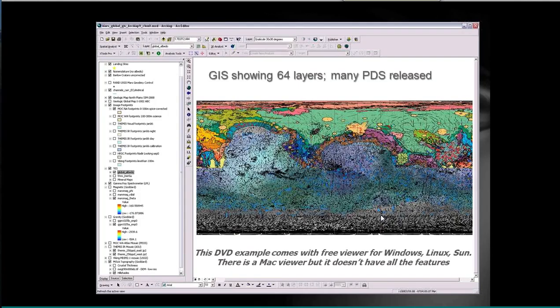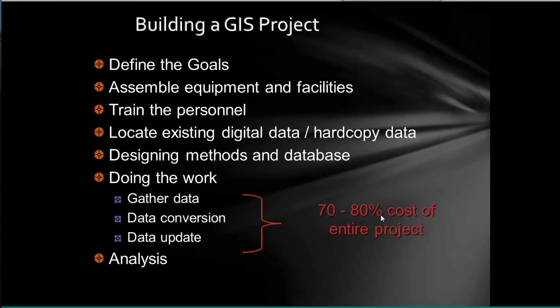We'll talk about an HRSC version at the end. Don't be afraid to load data — if it doesn't work, then you have to understand what to look at for projections. As with any GIS, the biggest cost is gathering data, data conversion, and data update. The 20% fun part is the analysis. When you go into GIS, understand there will be a lot of time spent gathering and getting data to work. We've been trying to make that step easier with PDS and ISIS so we're not spending hours converting formats.